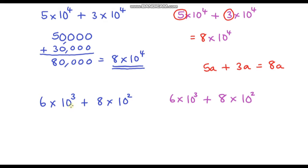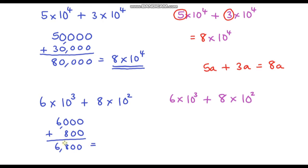Let's do another example, and this time notice our powers of 10 are not the same. Writing the numbers out in full: 6 times 10 to the power 3 is 6,000, and 8 times 10 to the power 2 is 800. Lining up the place values: 6,000 plus 800 is 6,800. Now writing that in standard form — our decimal point is at 6.8, and we move 3 places to the right — so our answer is 6.8 times 10 to the power 3.